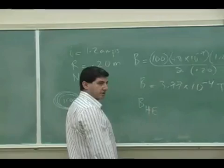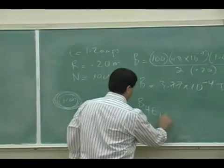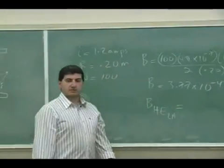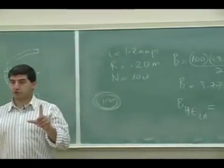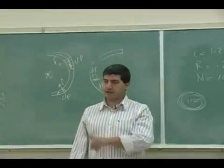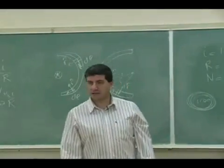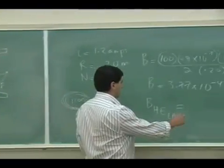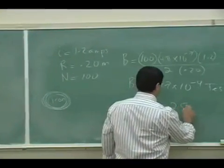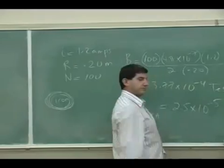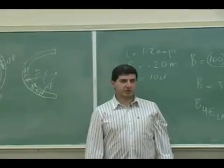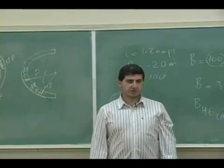The horizontal component of the Earth's magnetic field in LA - what was that in last week's lab? 2.5 times 10 to the minus 5 teslas, right?